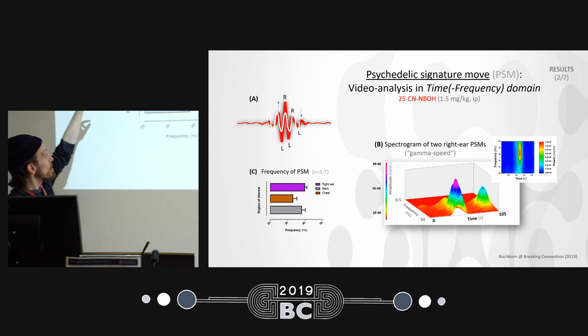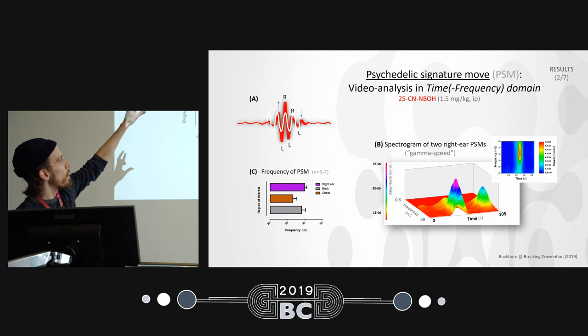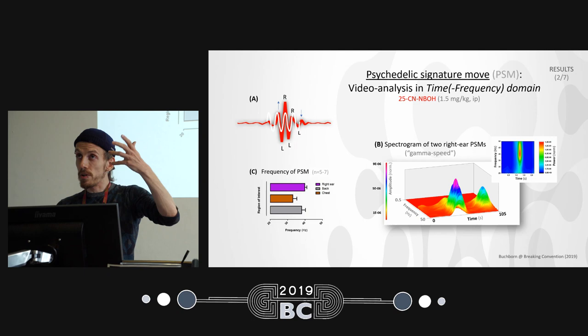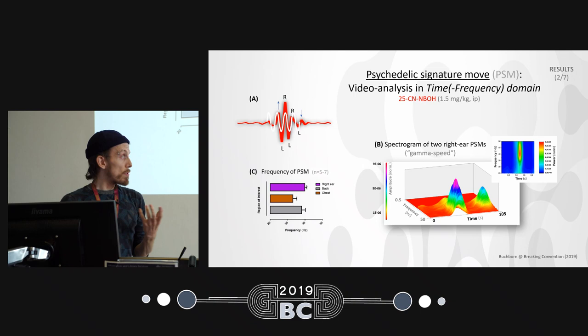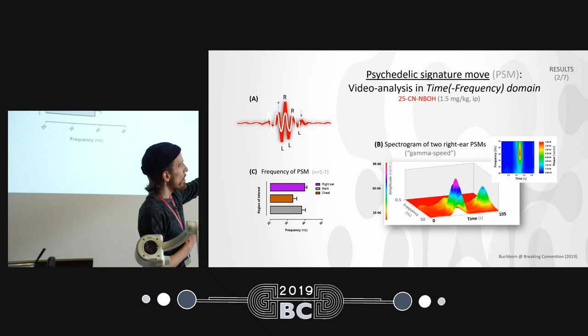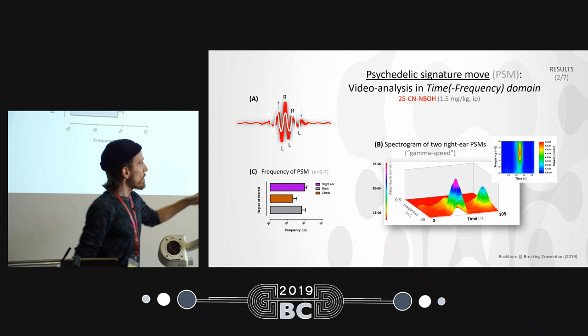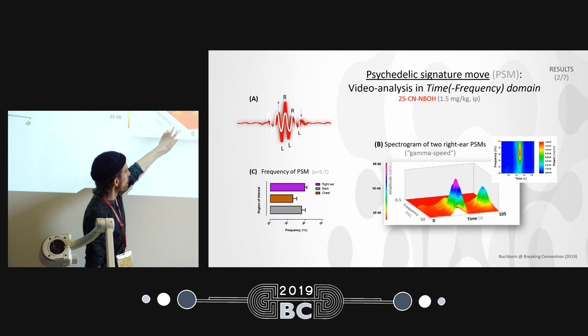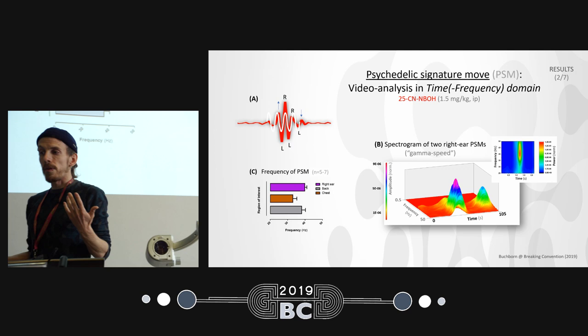Looking at the twitch in the time domain with a sinusoid overlaid, you can approximate from the number of cycles in 100 milliseconds that the twitch frequency is about 30–40 Hz. To be more precise, a Fourier transformation was performed — this spectrogram of two ear twitches shows the peak amplitudes, and the peak frequency is indeed about 30–50 Hz, placing it in the gamma frequency range.